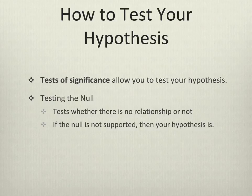Your test of significance will allow you to test your hypothesis, but what you're actually testing is the null. Remember, your null is that there is no relationship. What you test when you test a hypothesis is that there is no relationship between those two variables. If there is not no relationship, your hypothesis has been supported. If it does appear that there is no relationship, then you cannot reject the null and you cannot support your hypothesis.